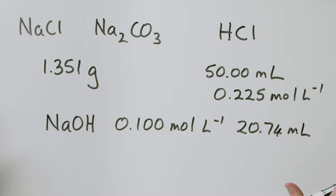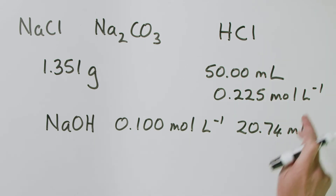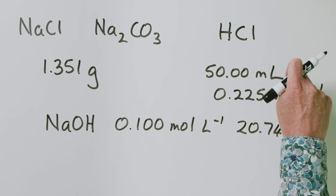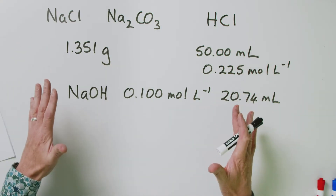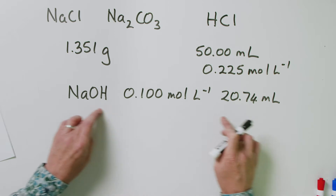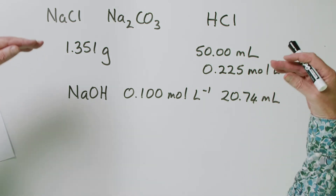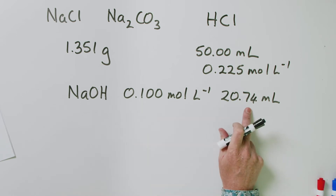The question we're answering: what's the mass percentage of sodium chloride in this mixture? We're given a concentration and volume of HCl, a concentration and volume of NaOH, and a mass of the mixture. We're going to start at the end, which seems strange — the last thing we do is the sodium hydroxide titration — and then work backwards to figure out how much sodium chloride is in the mixture.